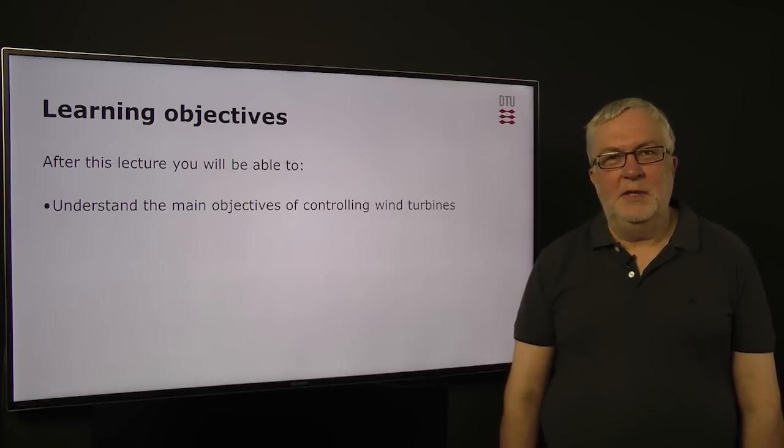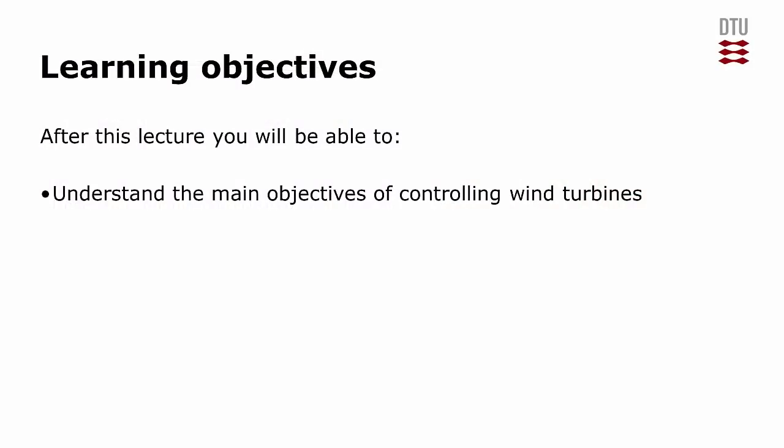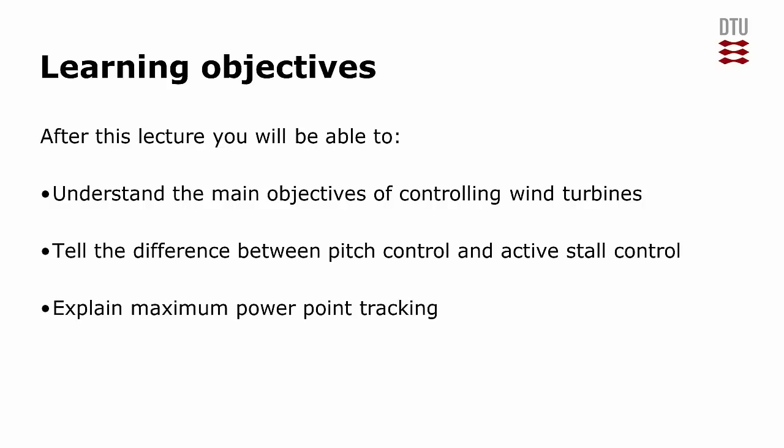The learning objectives of this session are first to understand the objectives of controlling a wind turbine. Secondly, we will dig into the difference between pitch control and active stall control. Next we will explain maximum power point tracking, and finally we will understand the control architecture of a wind power plant at an overall level.